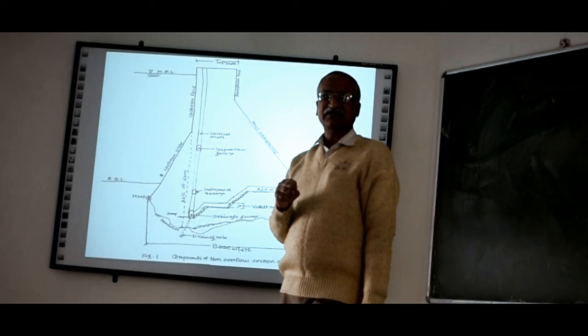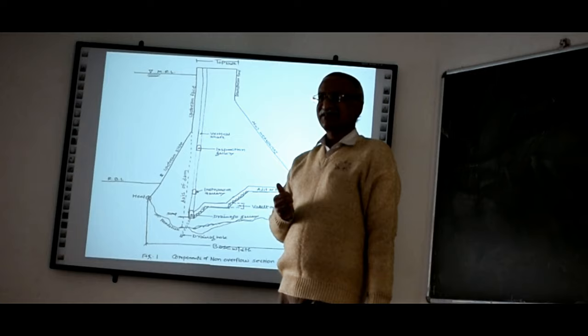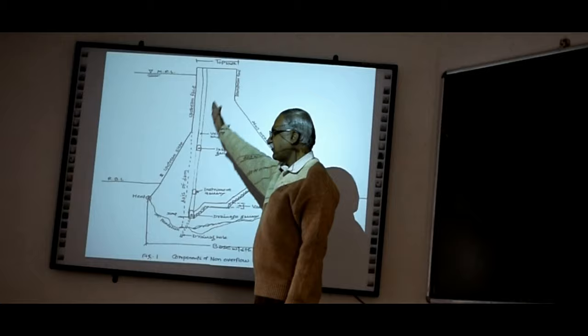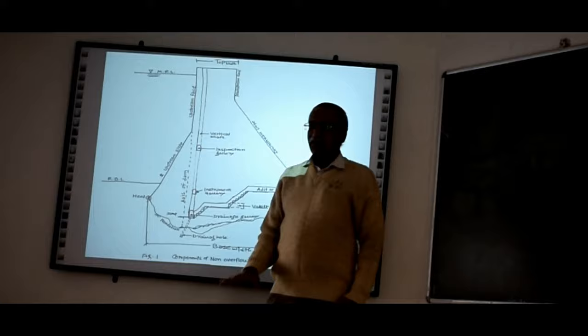When the weight of the dam is insufficient, it cannot resist all the forces and is required to be increased. That weight is increased by providing a slant on the upstream side. So the vertical upstream face in some such cases is made slanted for a certain height, which ultimately results in an increased weight of the dam, giving safe conditions for the safety and stability of the dam.